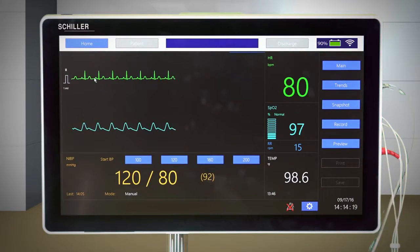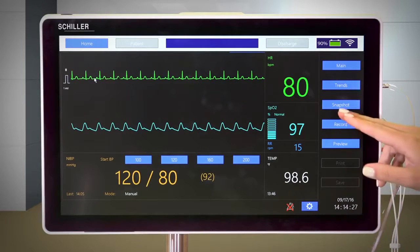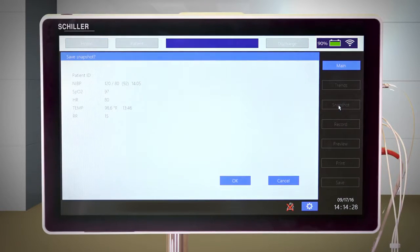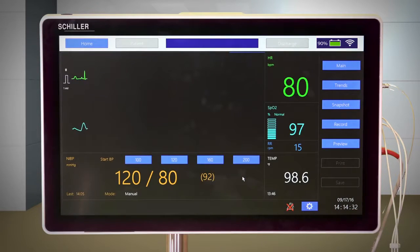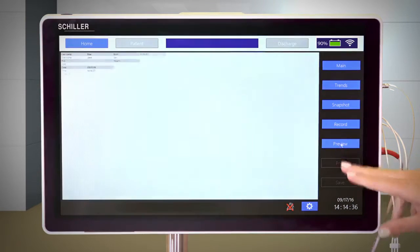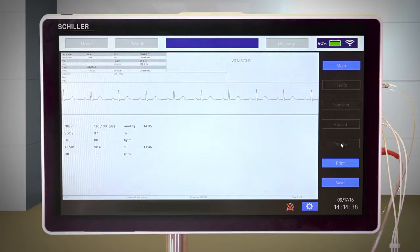The Vital Sign screen displays all current parameter values. By pressing Snapshot, you can save a snapshot of all current parameters at any given time and review them later, or press Preview and generate a report that will include the patient information, an ECG strip, and parameter values that can be saved and accessed in the future.